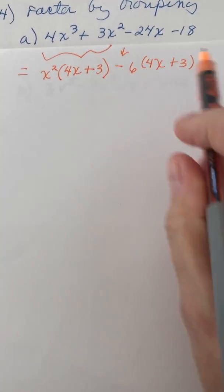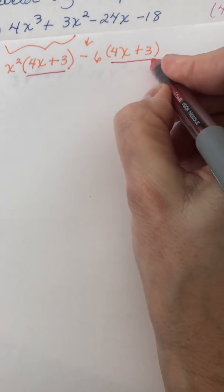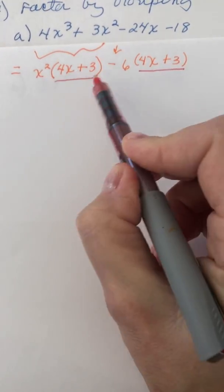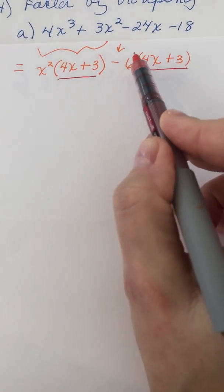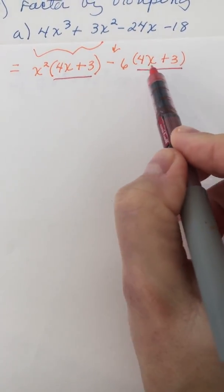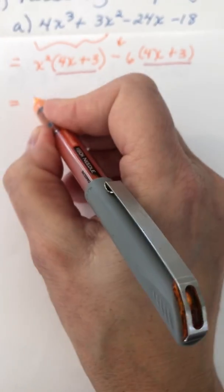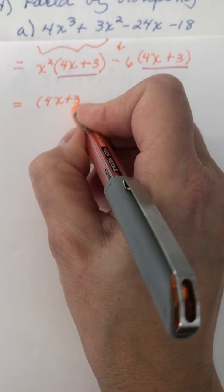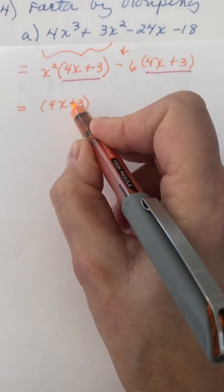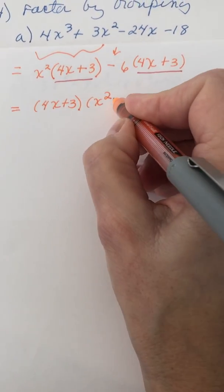Okay, and now this term has a common factor of 4x plus 3. So we can factor out the 4x plus 3. And that term multiplies x squared minus six.